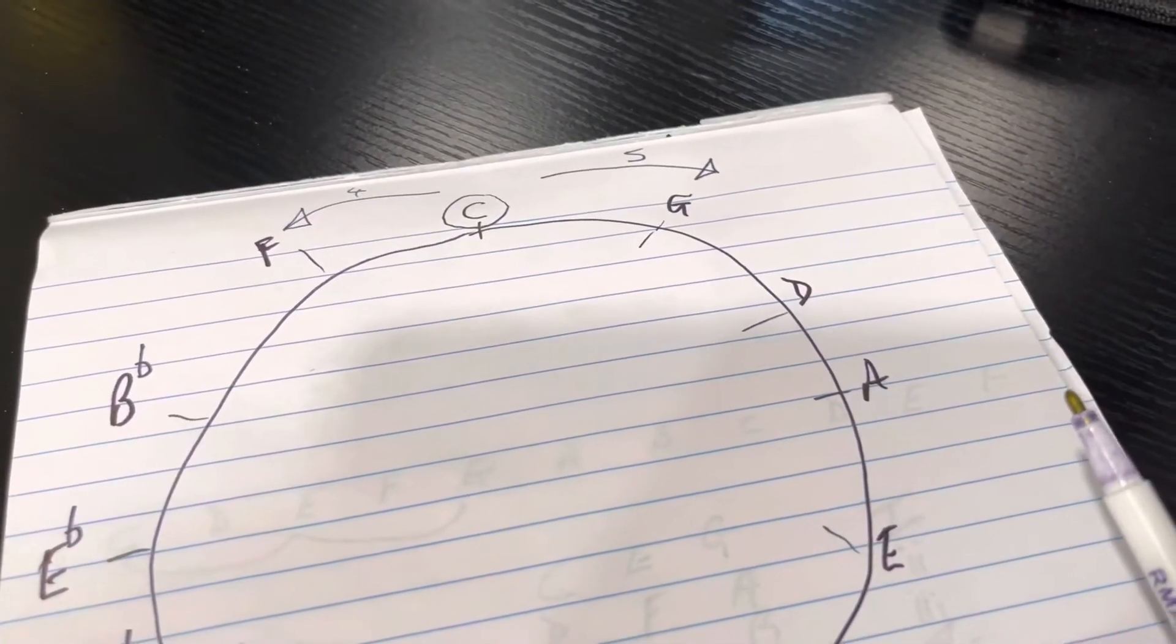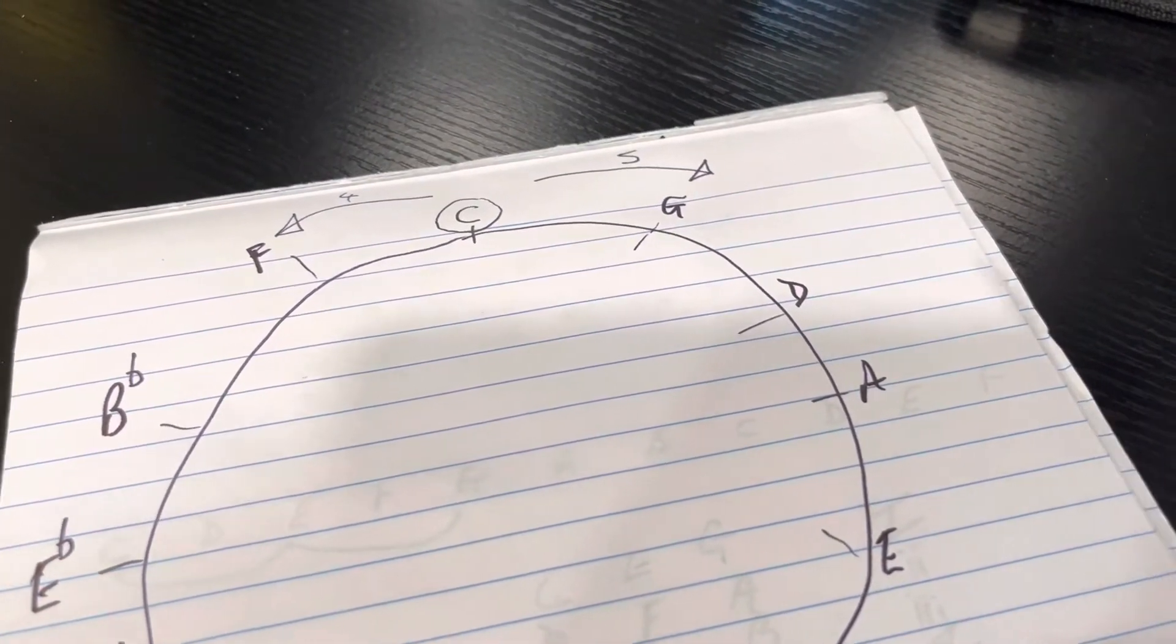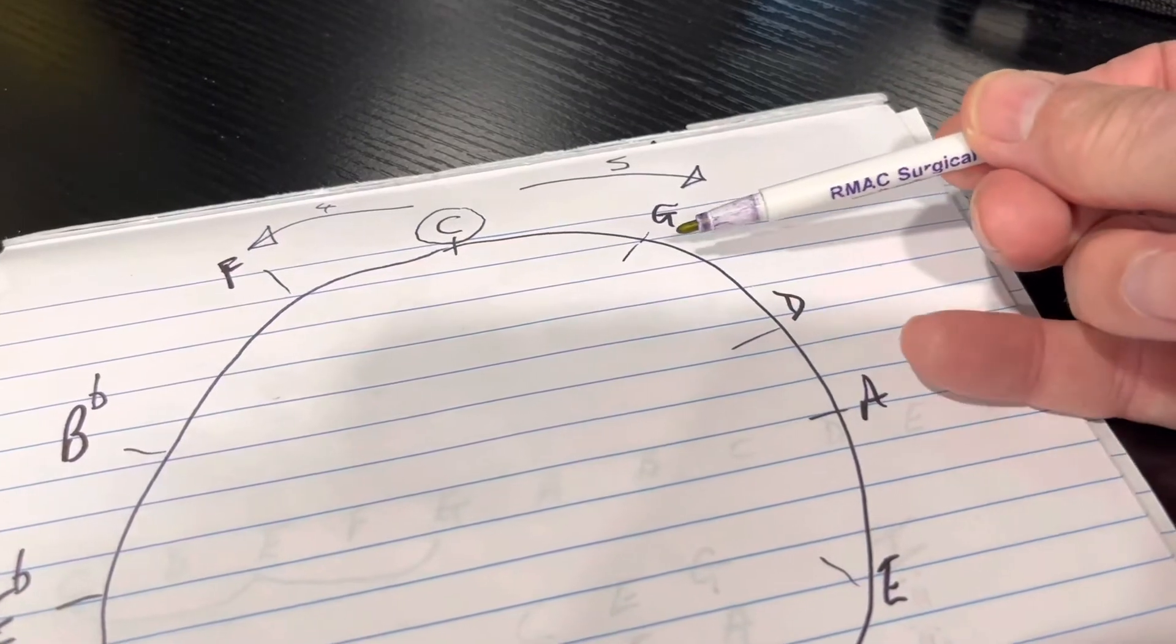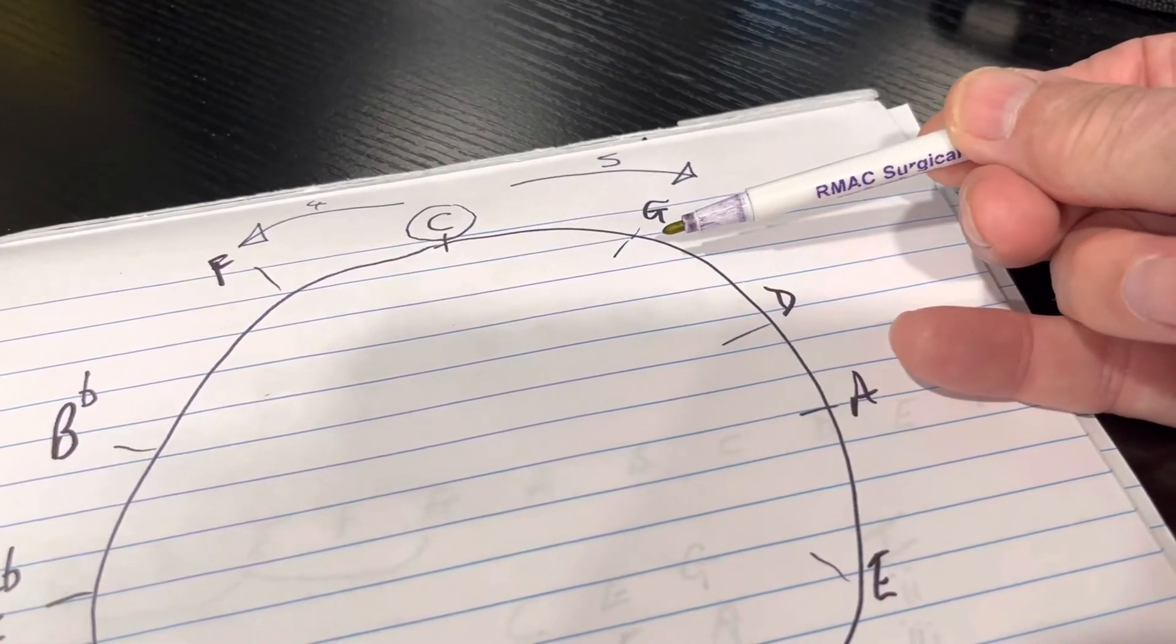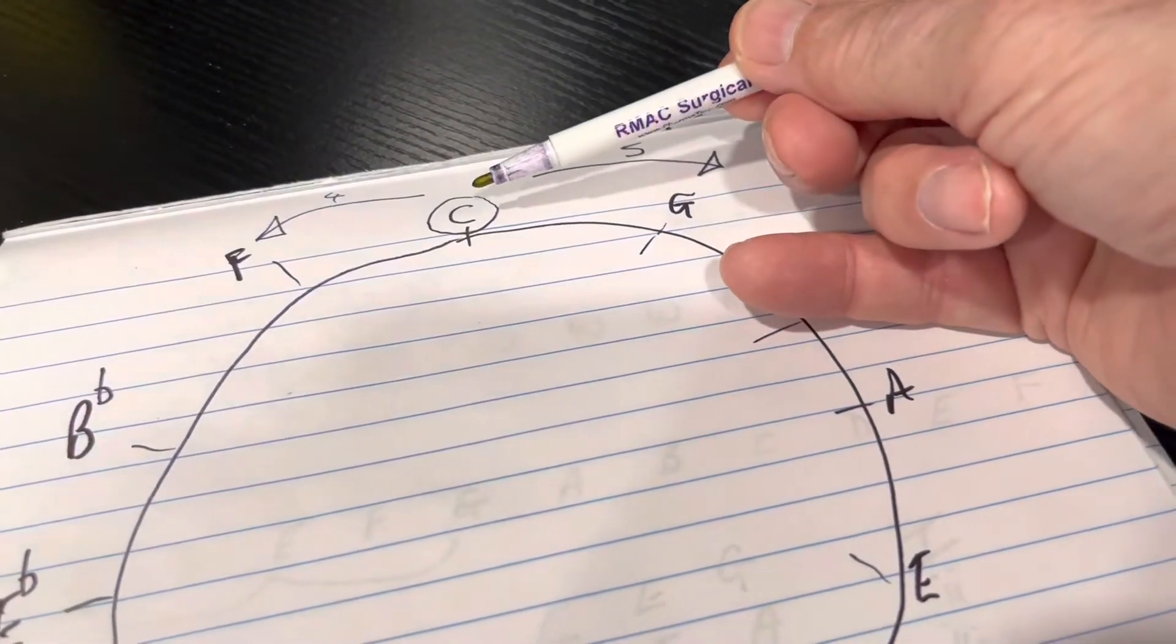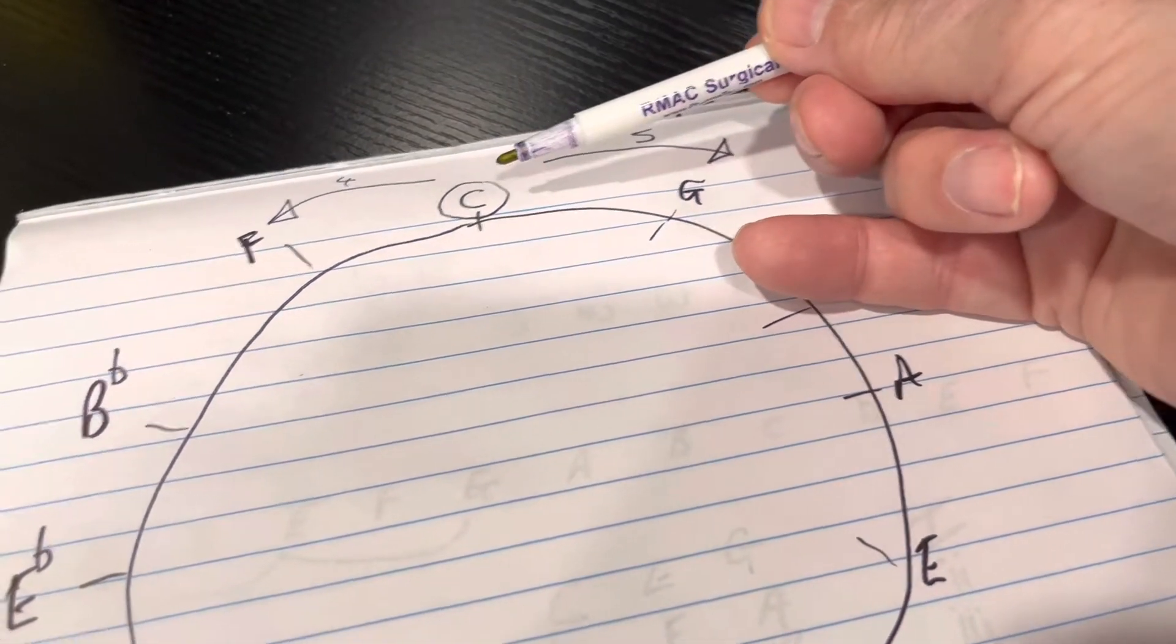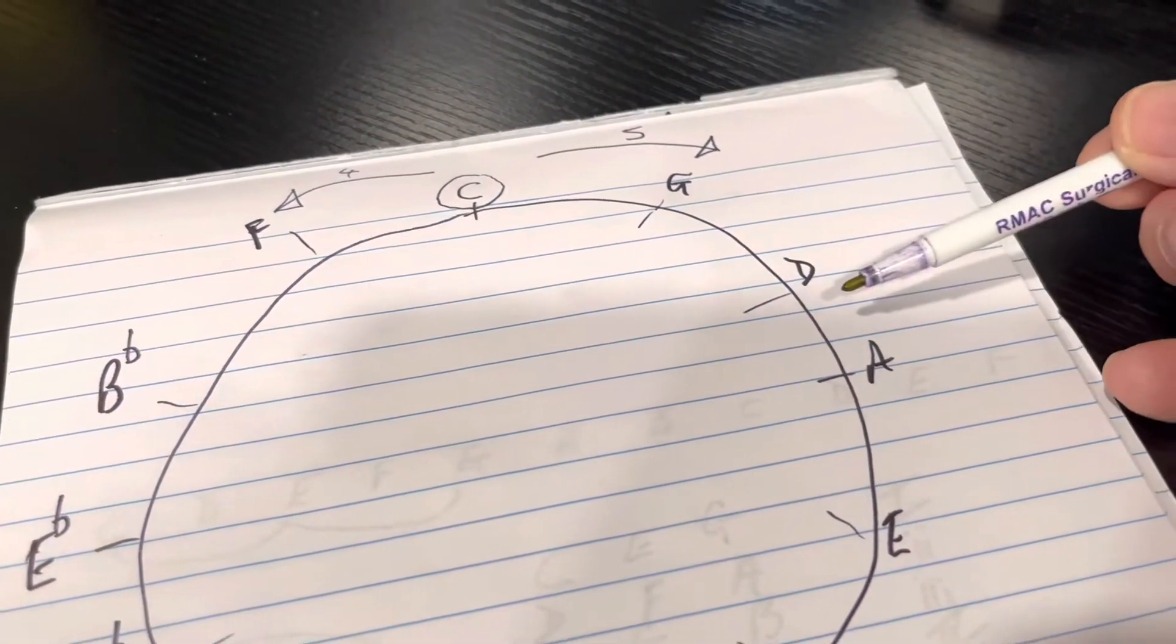Likewise, if we go to the key of G, here is G, we know that we go one step anti-clockwise, C major, and one step clockwise, D major.